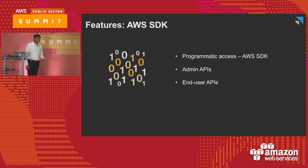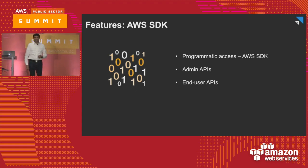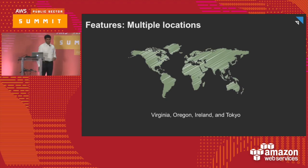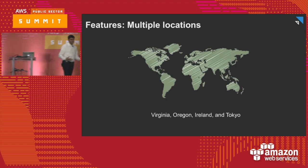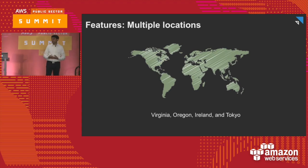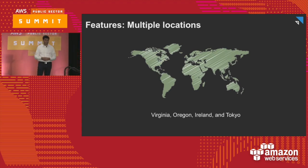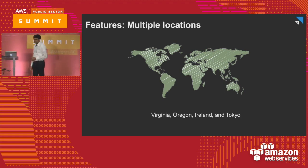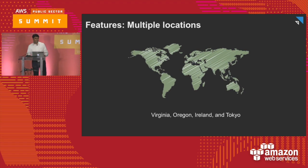The service includes support for the AWS SDK, so almost all admin functions and some end-user functions are available through the SDK. If you want to build a website and put a desktop application behind it for streaming, that is fully supported. The service is available in four regions right now — two in the US, Ireland, and Japan — to reduce latency between users and the AWS region from which they're streaming.